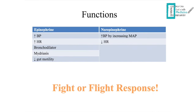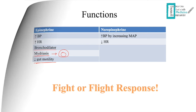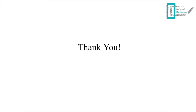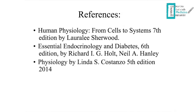The function of catecholamines can be remembered as the fight-or-flight response: they increase blood pressure and heart rate, epinephrine stimulates bronchodilation of the bronchioles, causes mydriasis (pupil dilation), and decreases gut motility. This concludes the video on adrenal physiology. Thank you for watching.